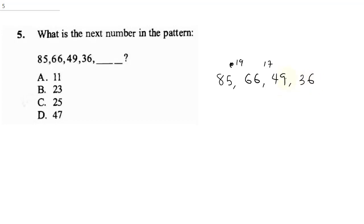The difference between 49 and 36 is 13. I'm noticing something — these differences are all prime numbers. Prime numbers are numbers that are divisible by themselves and one only. So the next prime number after 13 is 11, meaning I'm going to do 36 minus 11.